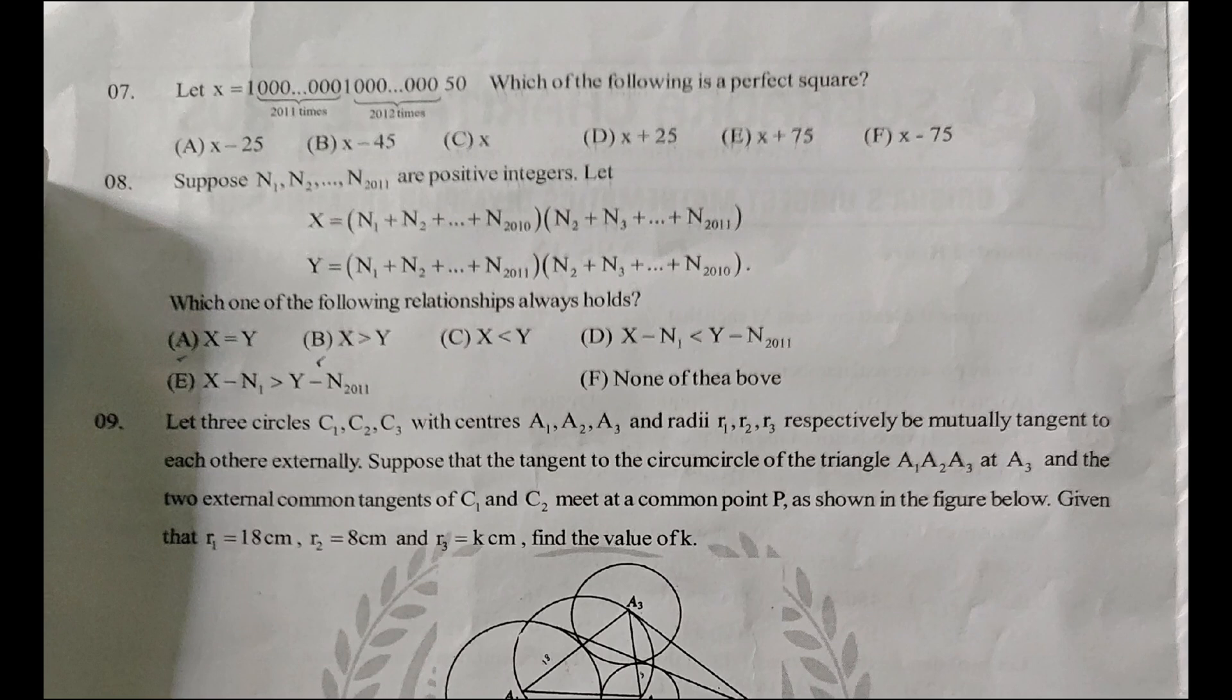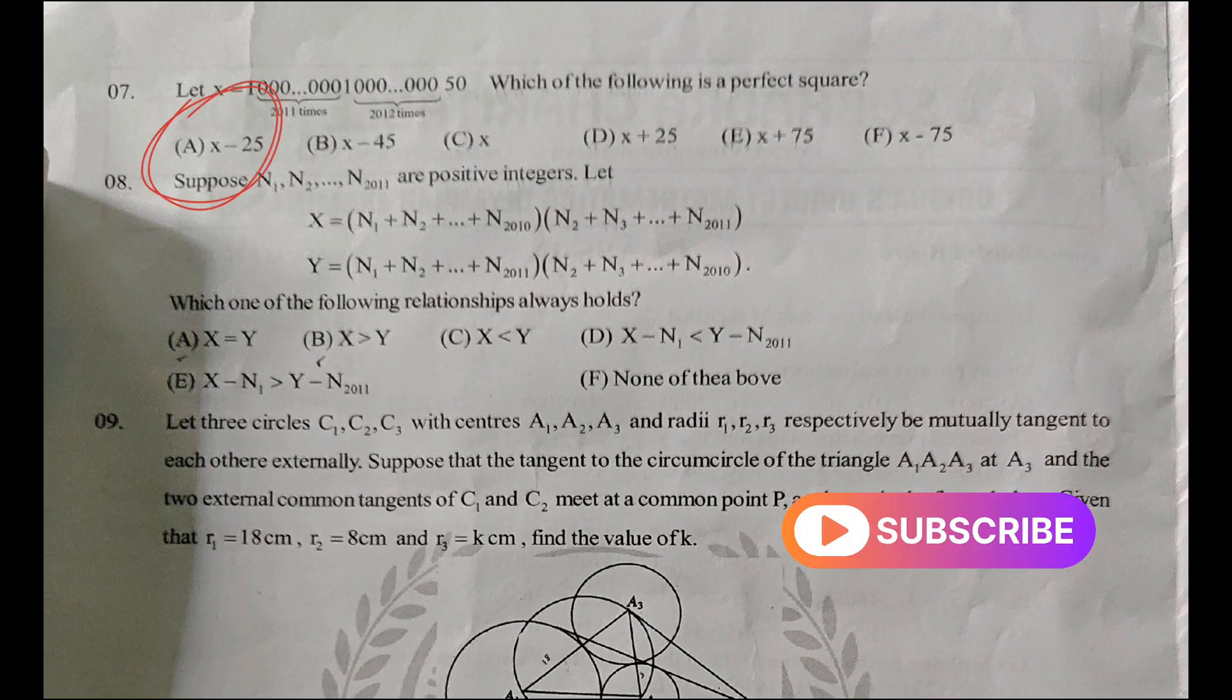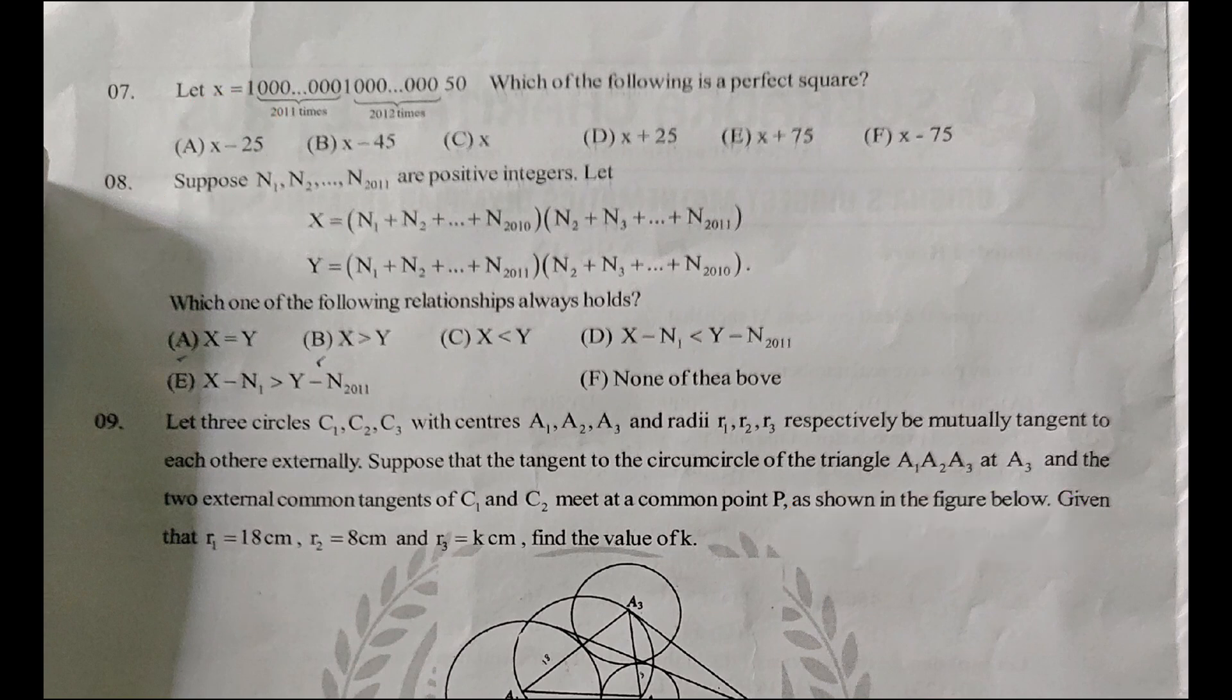Let X equal 1000 * 2011 * 0.100 * 2012 * 0.000 * 2012 * 0.50. Which of the following is a perfect square? The answer is A, X minus 25.